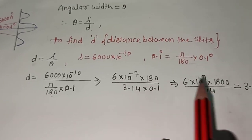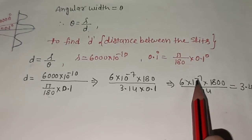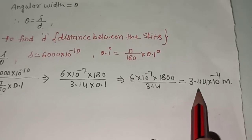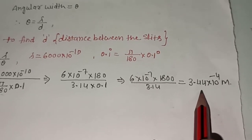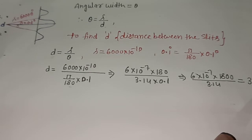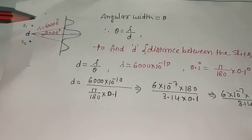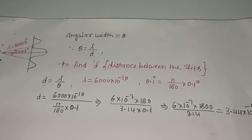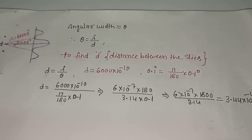Now we will take the decimal to the top and zero will come up. When we are calculating it, the value will be 3.44 times 10 to the power minus 4 meter. So the small d distance will be 3.44 times 10 to the power minus 4 meter.